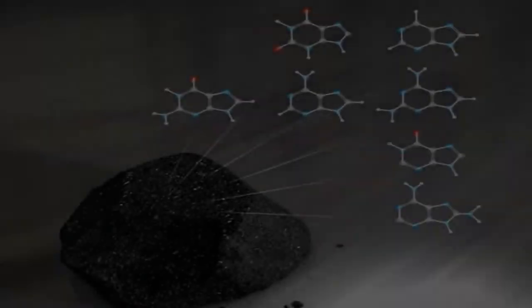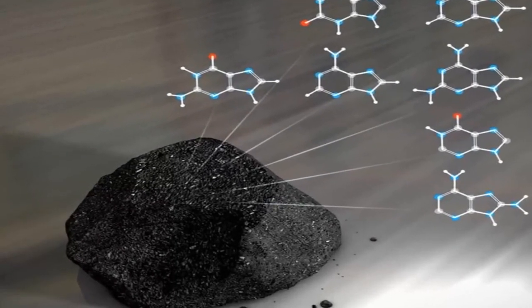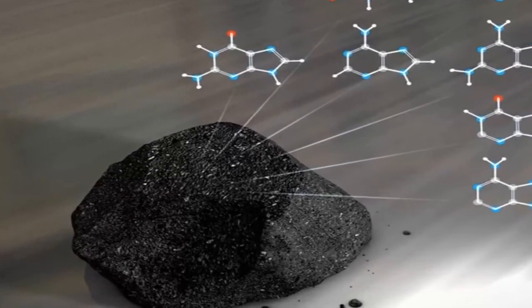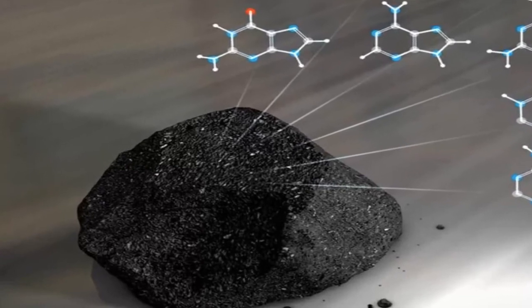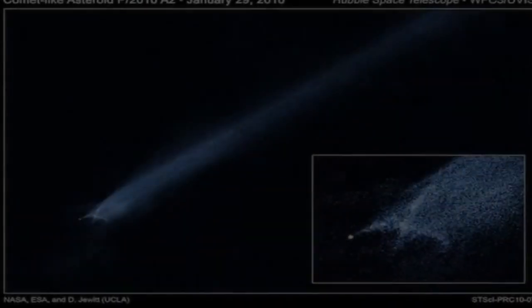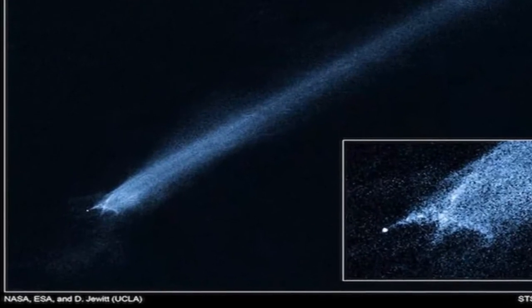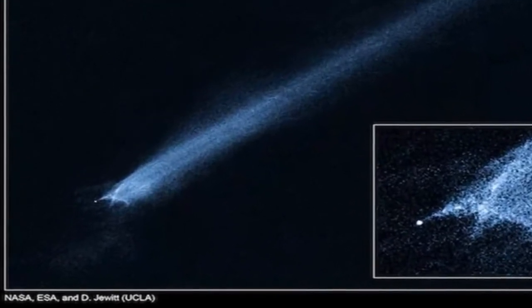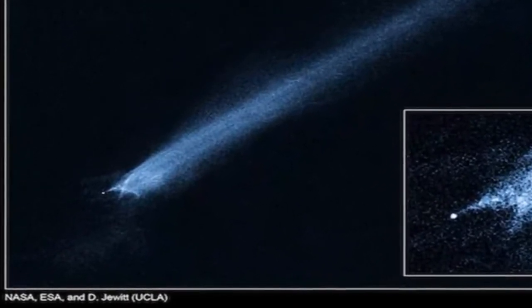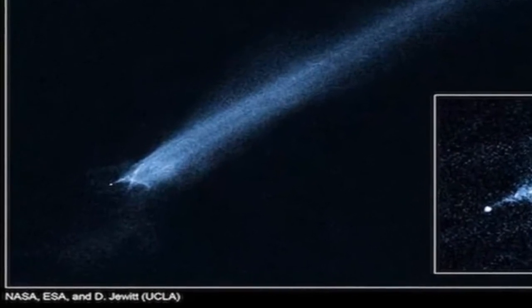This finding reveals that meteorites may have been molecular toolkits, providing the essential building blocks for life on Earth, Cleaves said. All this has implications for the origins of life on Earth and potentially elsewhere, Callaghan said.